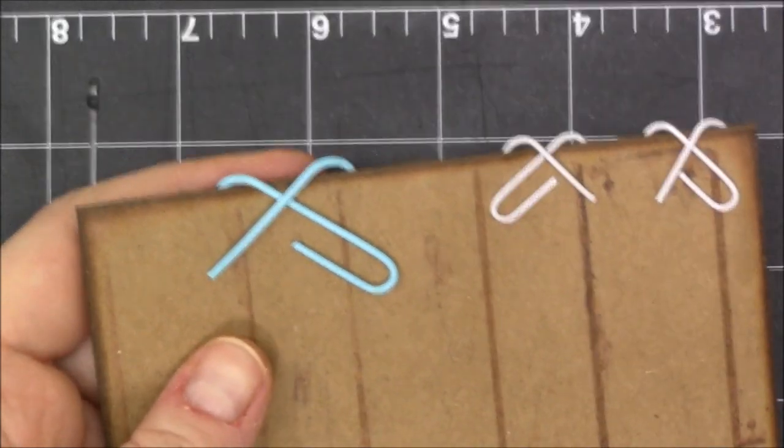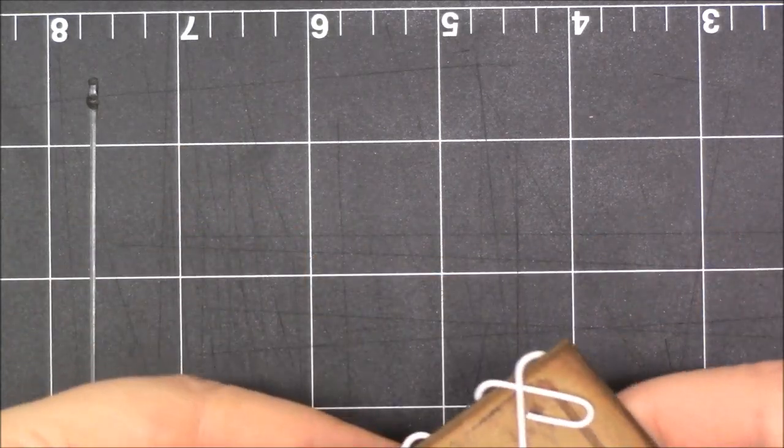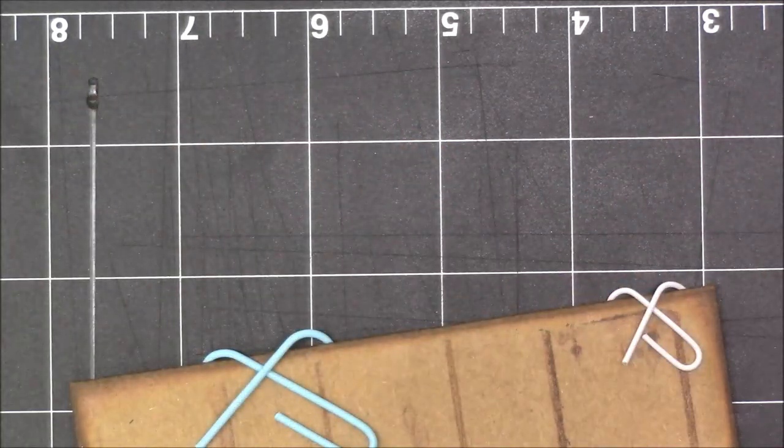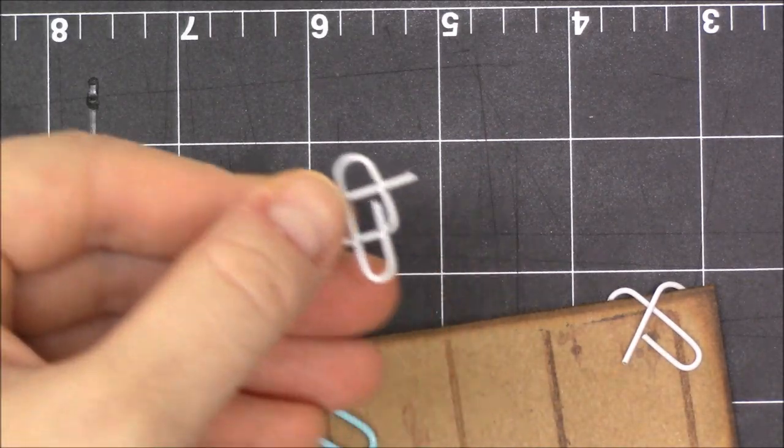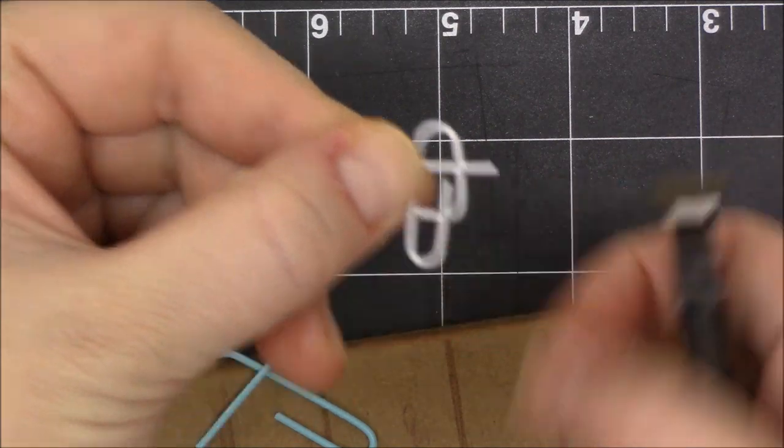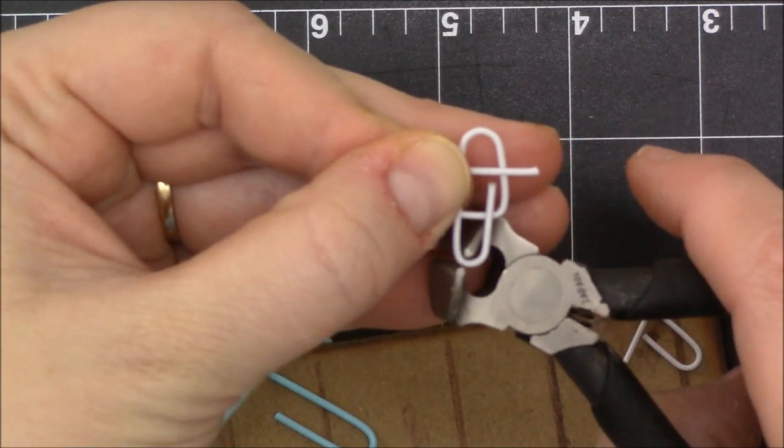One thing you can do - this is something that I have considered - is cutting this. I'm gonna cut once I'm finished. I'm gonna cut this small leg here so it just makes an X on the back.